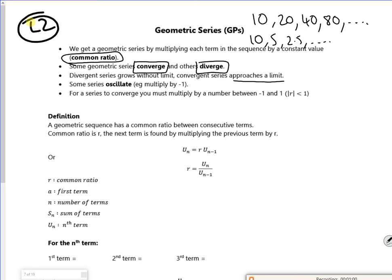I can have like 10, minus 20, plus 40, minus 80, if I was multiplying by minus 2.